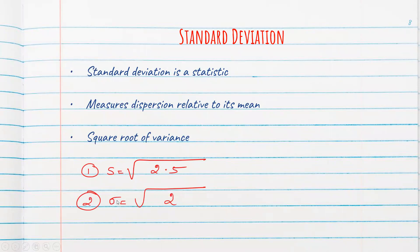In the second problem, we got the variance as 2. So standard deviation is equal to root 2. So the point that has to be remembered is variance is the square of standard deviation or standard deviation is the square root of variance.